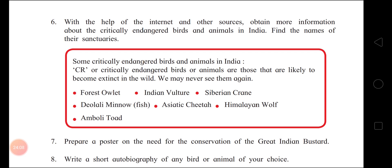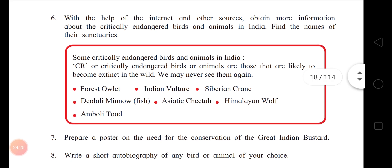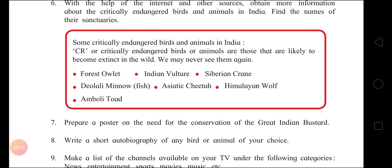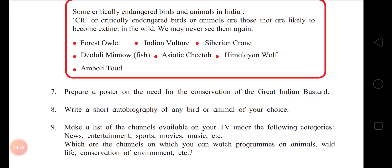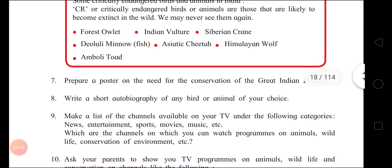Using the internet and other sources, obtain more information about critically endangered birds and animals in India — those that are likely to become extinct in the wild and we may never see again. Examples include: Forest Owlet, Indian Vulture, Siberian Crane, Asiatic Cheetah, Himalayan Wolf, and Amboli Toad. Find the names of their sanctuaries and we will discuss in class. You can also prepare a poster on the need for conservation of the Great Indian Bustard, and watch programs on animals, wildlife and conservation on channels like National Geographic, Discovery, and Animal Planet.